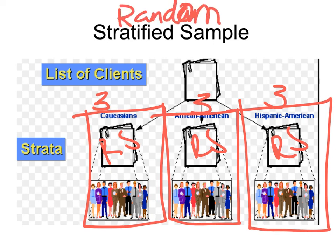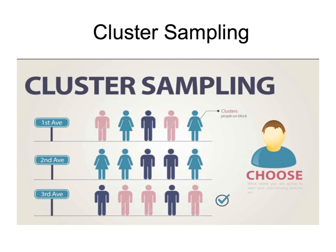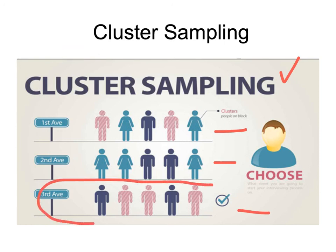With cluster sampling, you have groups such as people on 1st Ave, 2nd Ave, and 3rd Ave. You pick one cluster — say 3rd Ave — and ask everyone on that street your question. That entire cluster becomes your sample for making inferences. With systematic sampling, you pick every nth person — for example every fourth individual. Whichever positions are selected, you ask that person, and politely let all others go by.